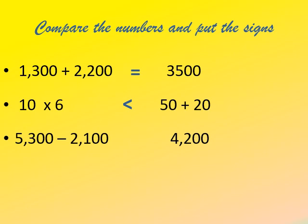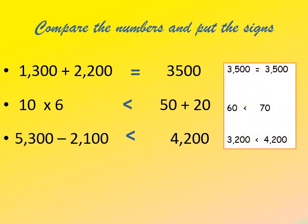In the third example, we have 5300 − 2100 on the left. When we subtract, we get 3200. The number on the right is 4200. Since 4200 is greater than 3200, by doing some working we decide which number is greater, which is smaller, or whether two numbers are equal.